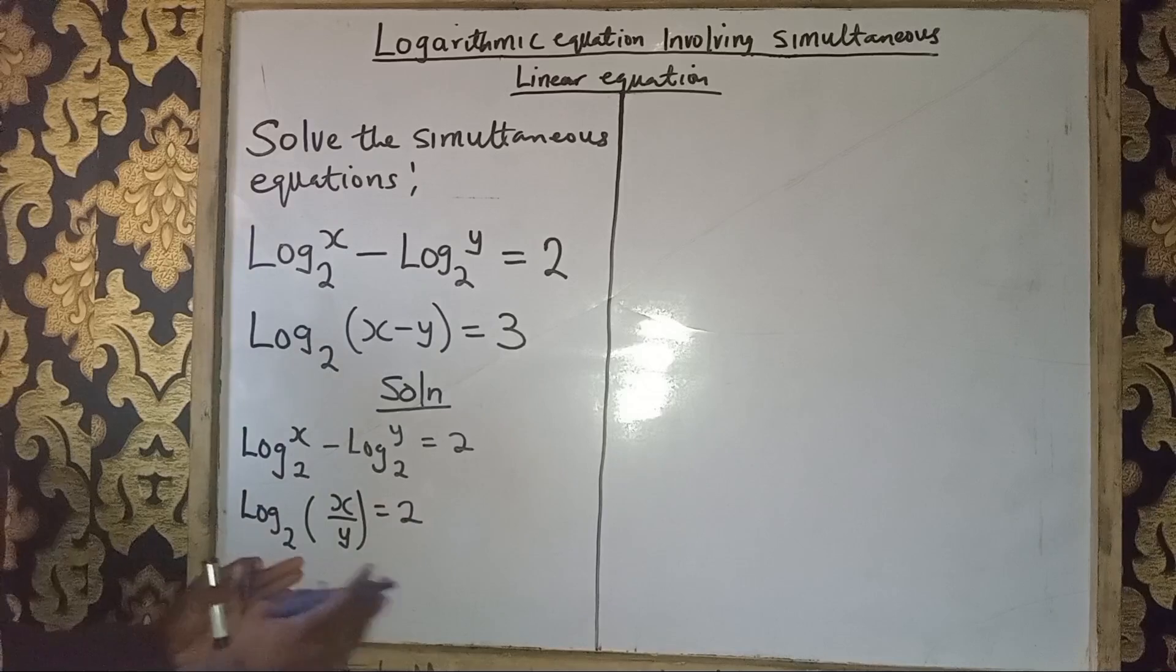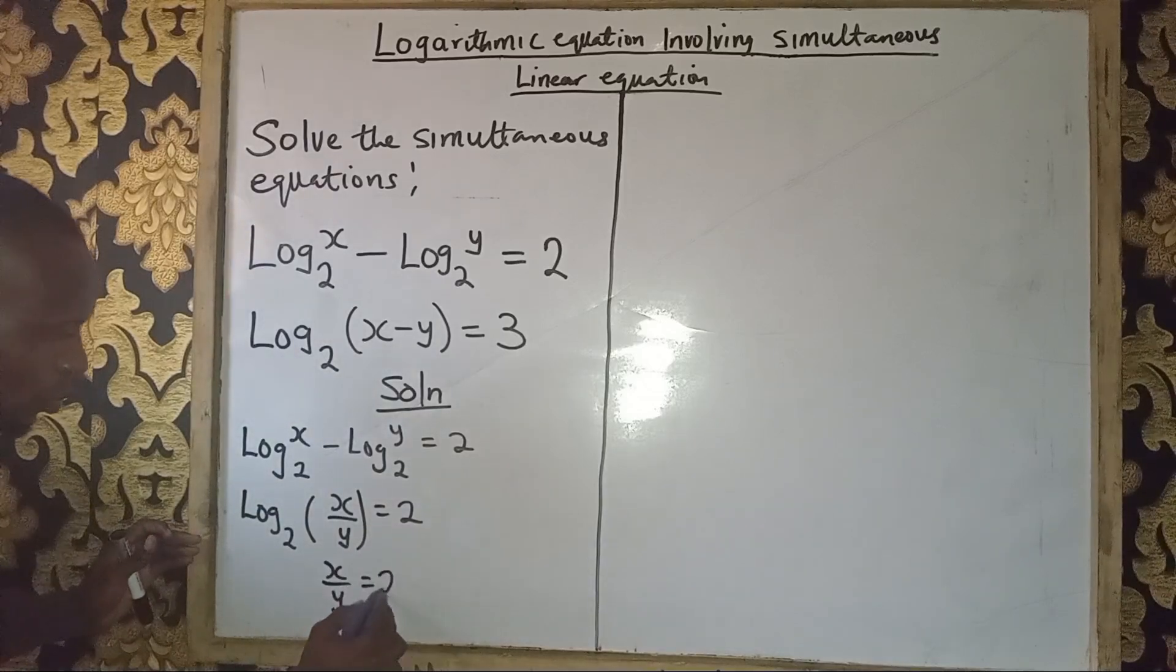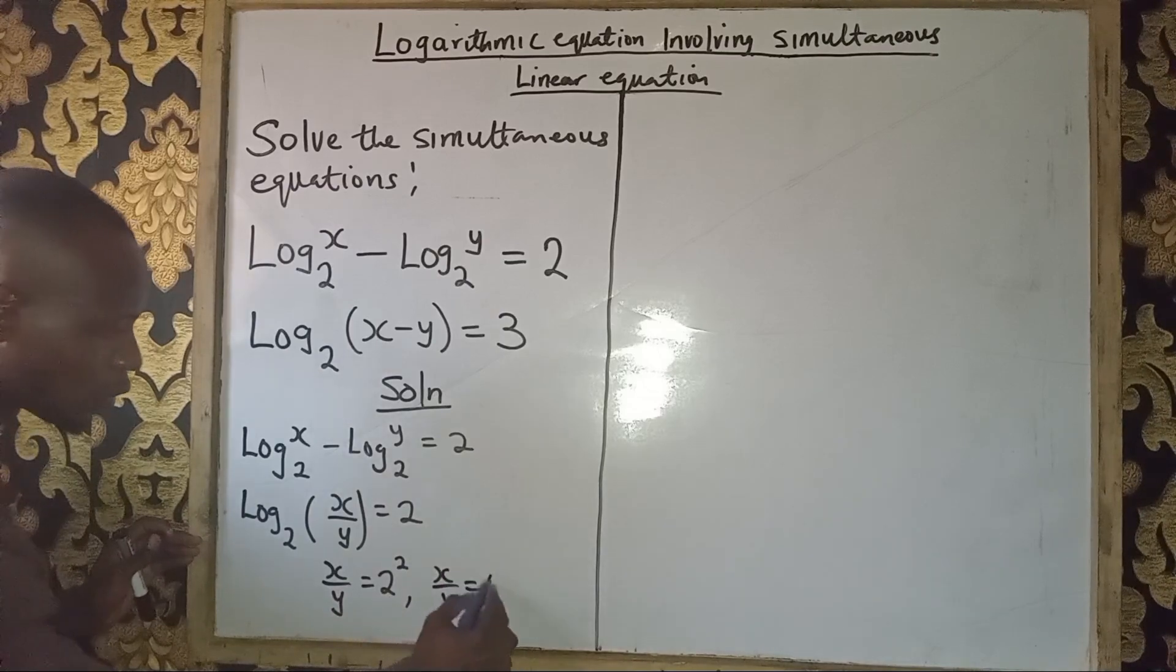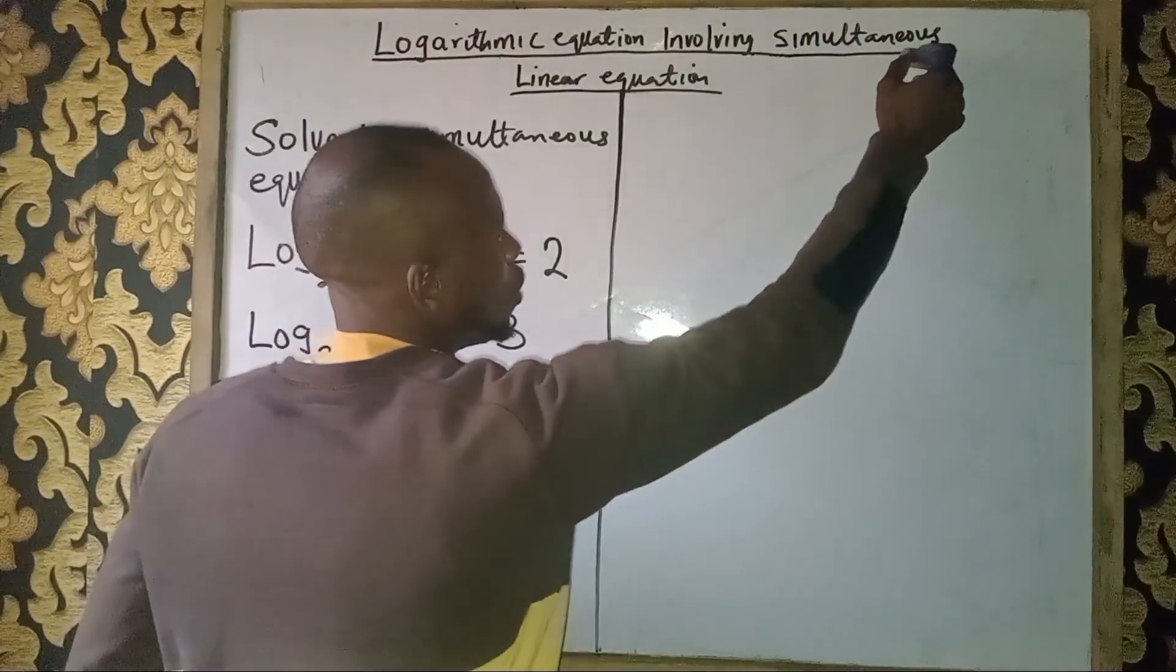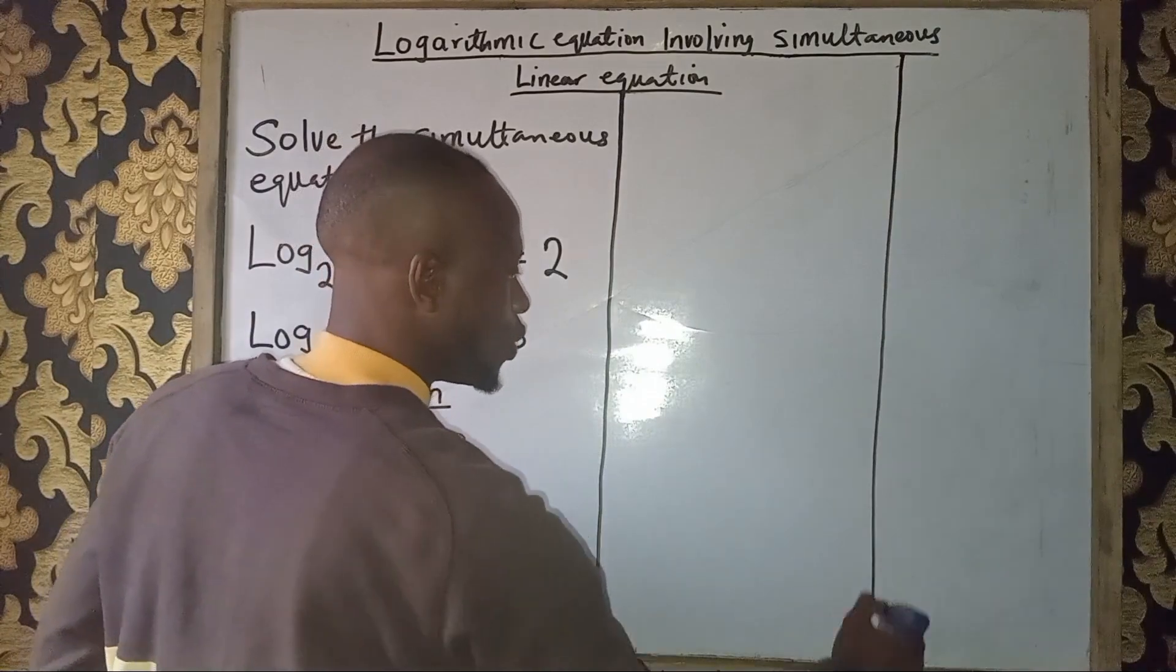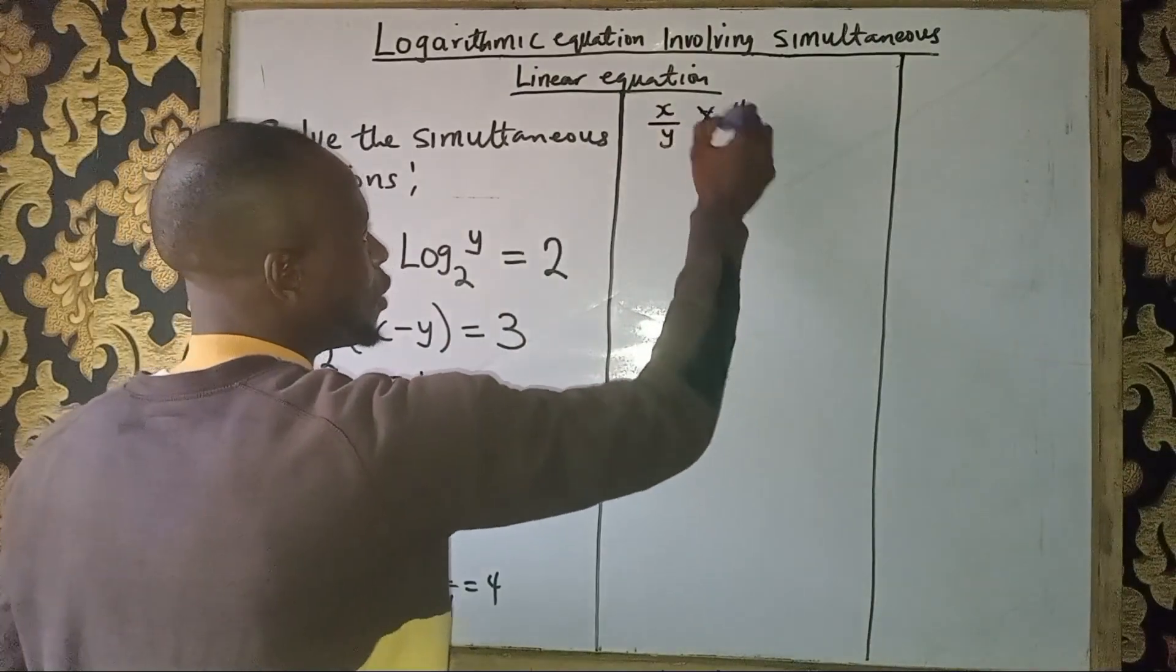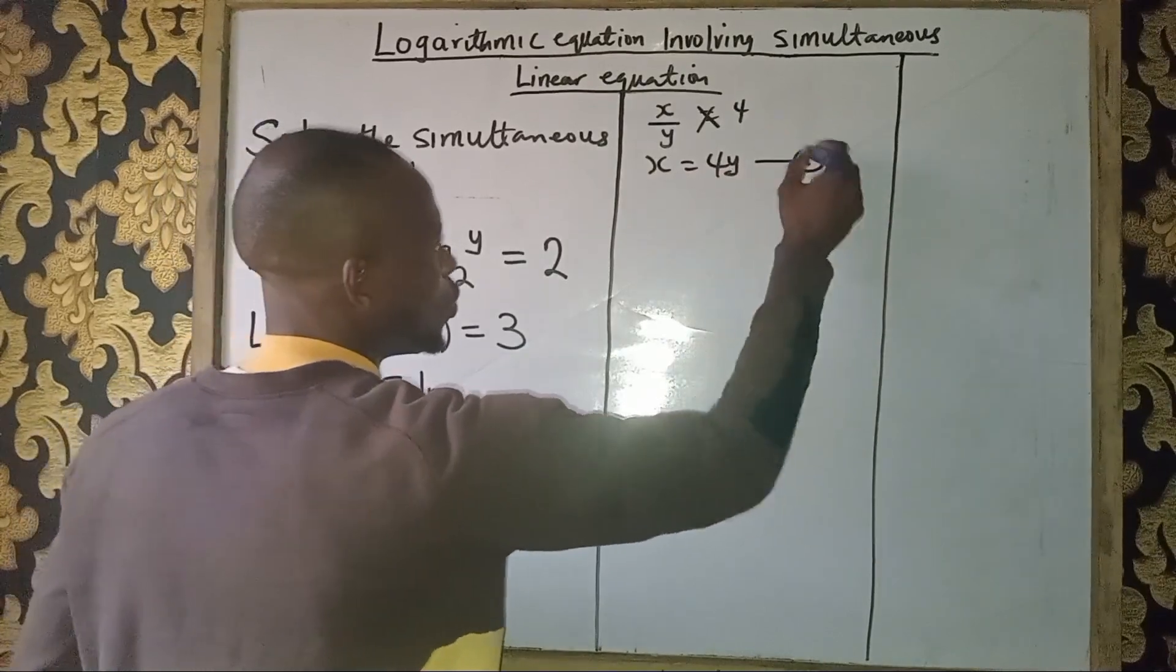If you take the log of both sides in base 2, you will have x/y equals 2 raised to power 2, which is the same as saying x/y equals 4. So x/y equals 4, which means x equals 4y. We call that equation 1.